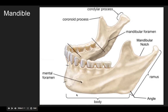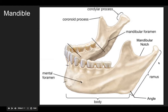In the mandible, we have the body, which forms the chin. We also have the angle, which is in between the ramus and the body — and you can remember this because it is an angle. The ramus is what connects the mandible to the temporal bone.